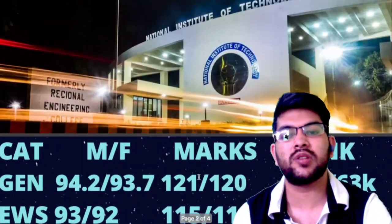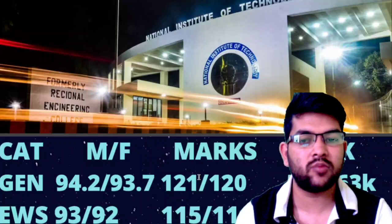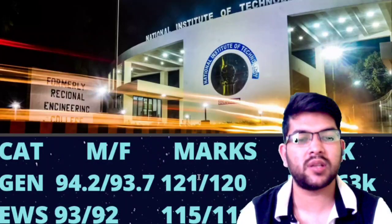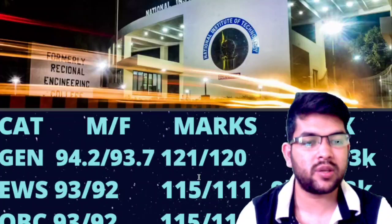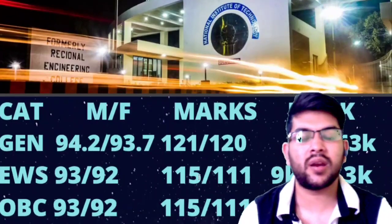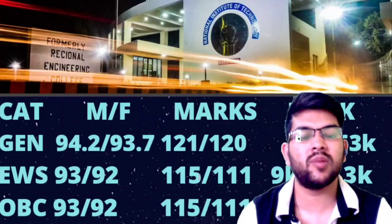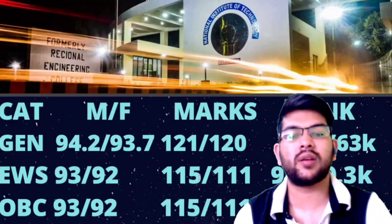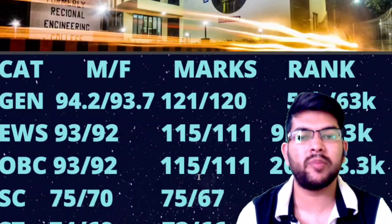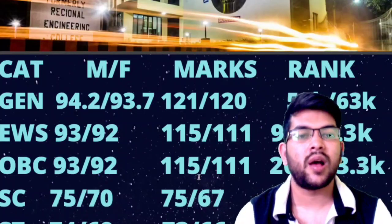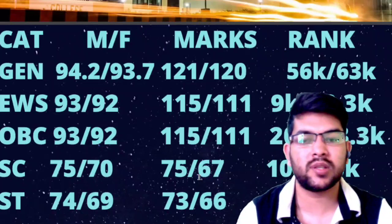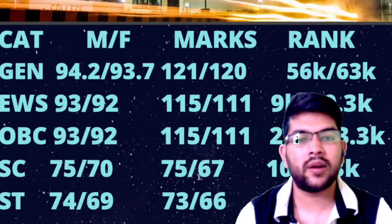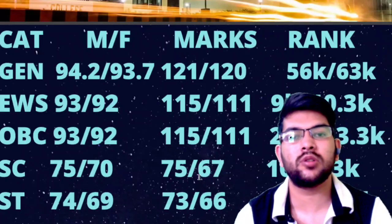Now for top 10 NIT, for General candidates percentile should be 94.2 and 93.7 for male and female, marks requirement 121 and 120, and CRL rank 56,000 and 63,000. For EWS: 93 and 92 percentile, marks 115 and 111, rank 9,000 and 10,300. For OBC: 93 and 92 percentile, marks 115 and 111, rank 20,000 and 23,300. For SC: 75 and 70 percentile, marks 75 and 67, rank 10,000 and 13,000. For ST: 74 and 69 percentile, marks 73 and 66, rank 5,100 and 6,200.